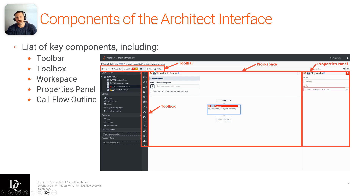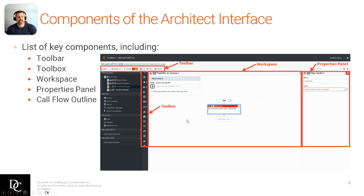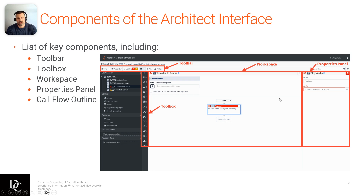The toolbox is where all of the components are — common modules, setting or getting data, transferring to menus or queues, flow outcomes, data actions — that's where you'll pull and drag from. Your workspace is the center point where your focus will be. That's where you'll click and drag and apply different components, such as playing audio, doing a menu check, or transferring to sales, for example.